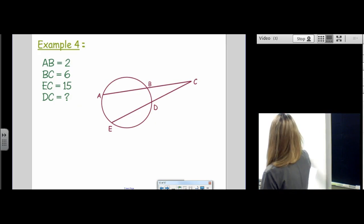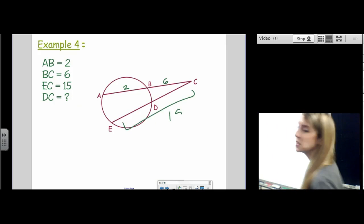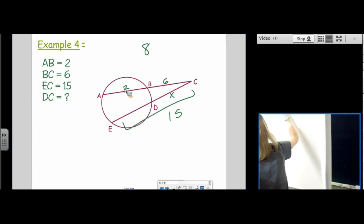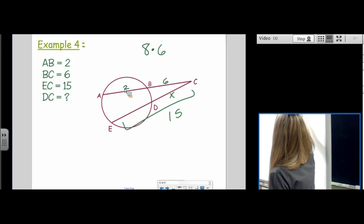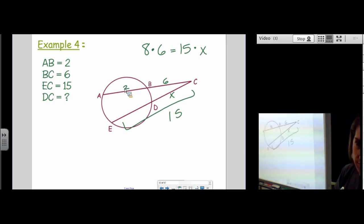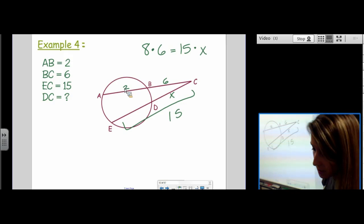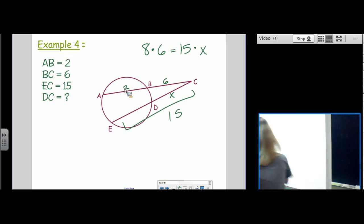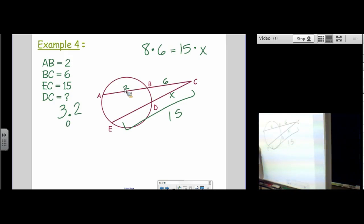AB is two. BC is six. EC is fifteen. Find DC. This one is easier than the one we just did. Whole times external equals whole times external. Do we have any questions here? You know how I got the eight. Are we okay with that? So, it's just eight times six divided by fifteen. We're getting another decimal, right? Three point two. Or sixteen fifths.